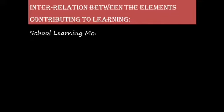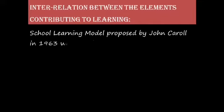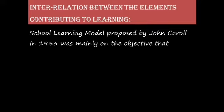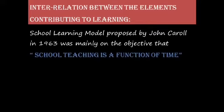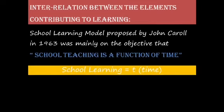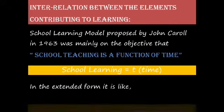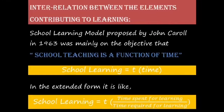Carroll's school learning model, proposed in 1963, was mainly on the objective that school teaching is a function of time, and that's why he said that school learning is equal to time. In the extended form, it is: school learning equals time spent for learning divided by time required for learning.